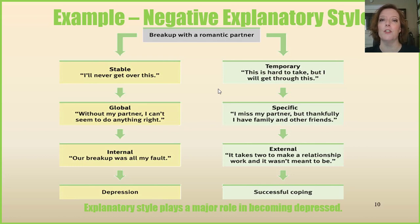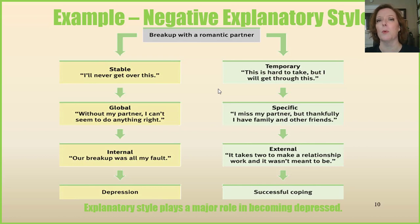On the other hand, if you think of the situation as temporary, very specific, and consider that there are external factors at play, you can experience a more successful coping strategy and have less risk of becoming depressed. For example: 'It's hard to take, but I'll get through this. I miss my partner, but thankfully I have other family and friends. It takes two to make a relationship work, so this clearly wasn't meant to be.' These are more optimistic and positive explanatory styles of thinking, and they are less likely to result in a depressive state.